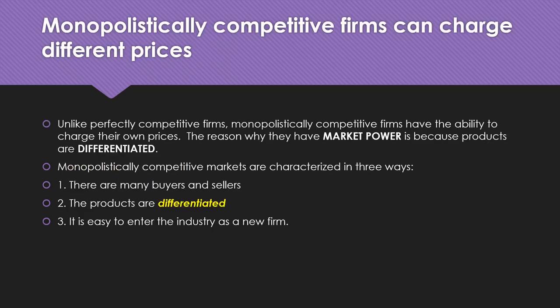The three characteristics that separate these four market structures are: how many buyers and sellers participate in the market, whether products are differentiated or not, and the difficulty it takes to enter the industry as a new firm. For a monopolistically competitive market, the big difference from perfect competition is the ability to differentiate products.